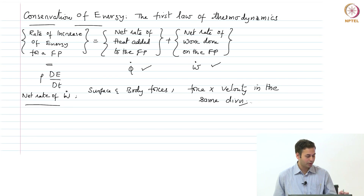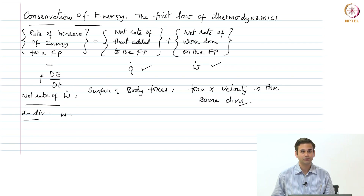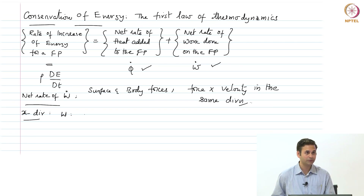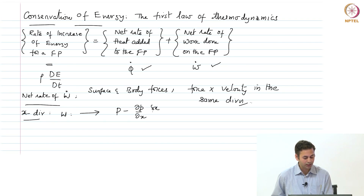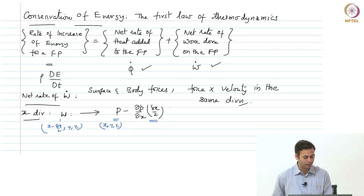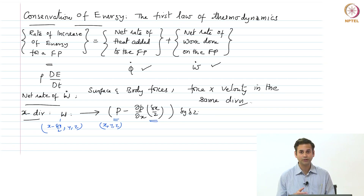We consider the forces acting in the x direction. Recalling the fluid element from the last lecture, we had six faces: east, west, north, south, front, and back. If I consider the west face, the forces acting in the x direction were a pressure force and a normal stress tau_xx. On the west face, the pressure acts in the positive x direction by an amount p minus (∂p/∂x)(δx/2), since p is defined at x,y,z and the west face is at x minus δx/2.